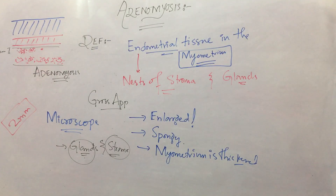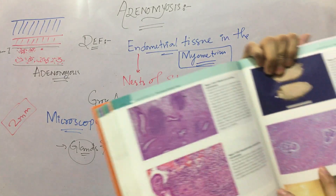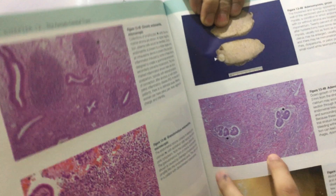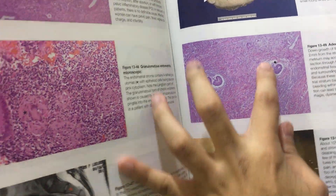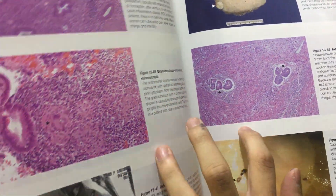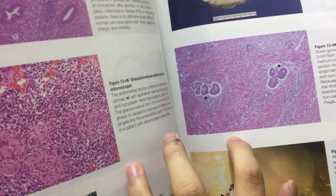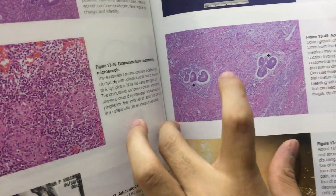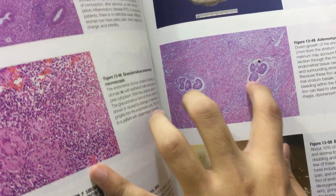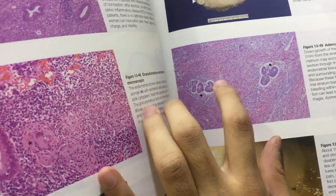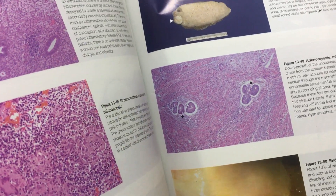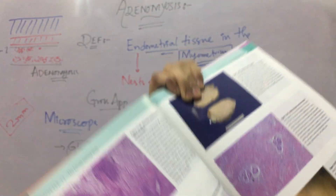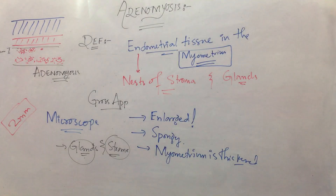Let me show you the microscopic appearance. This is the myometrium, and in the myometrium you can see there are nests of glands and stroma present here. This condition is known as Adenomyosis.